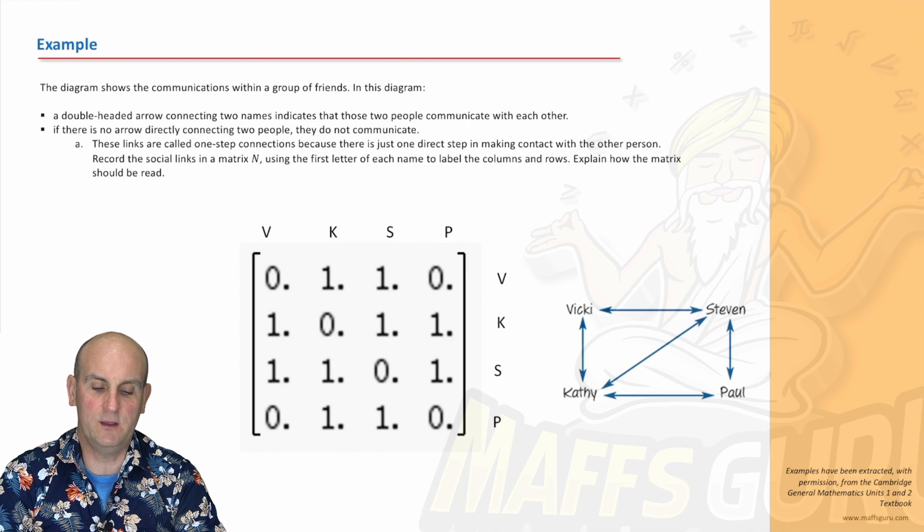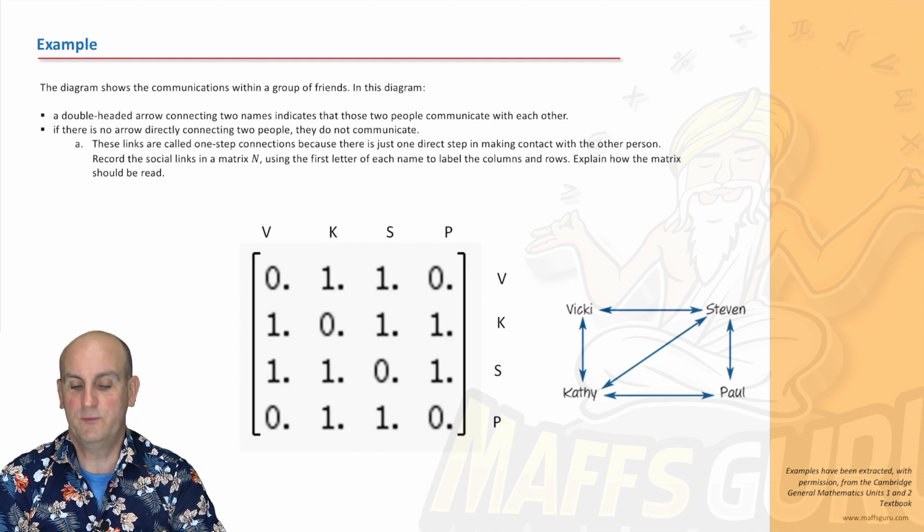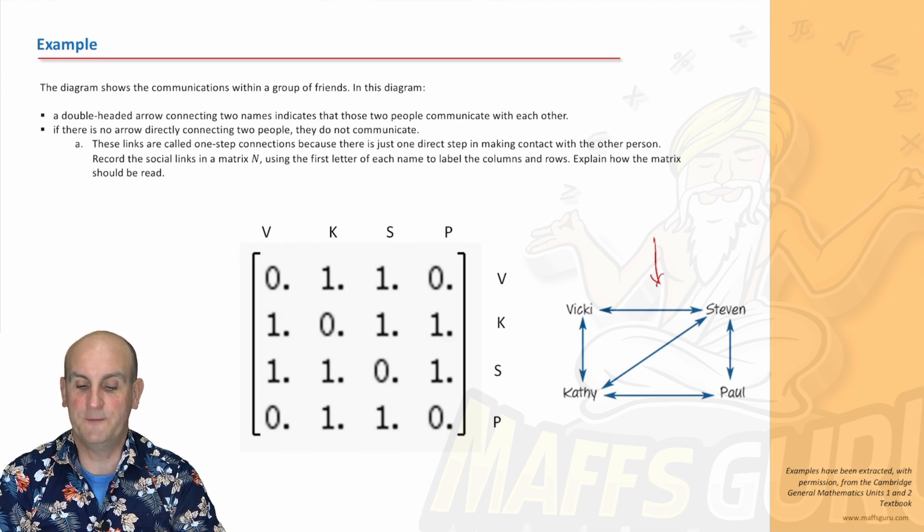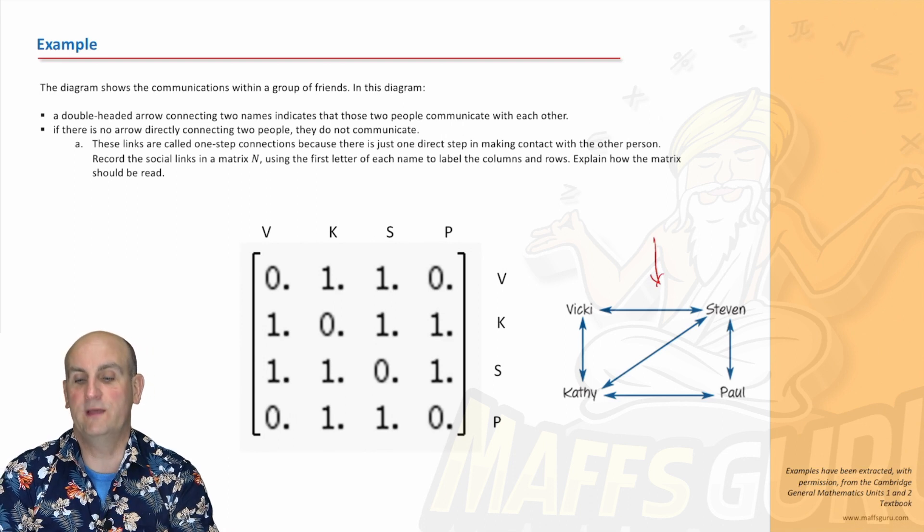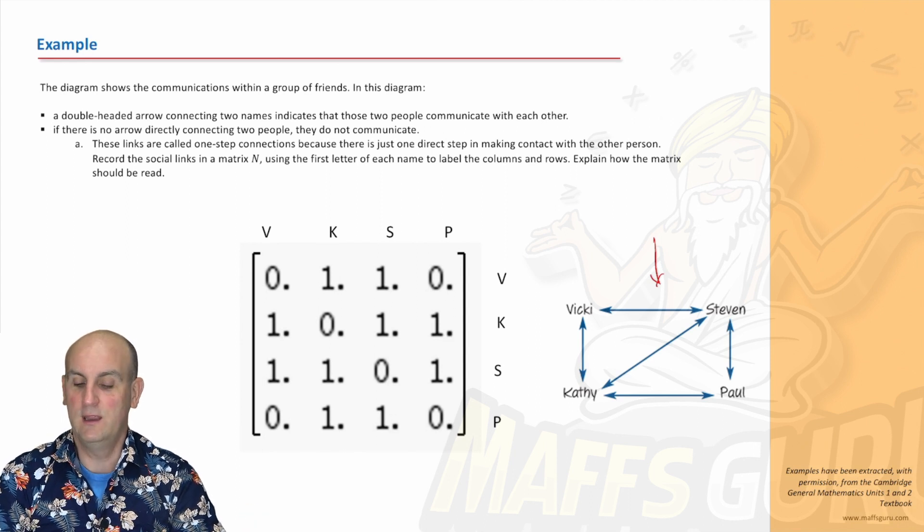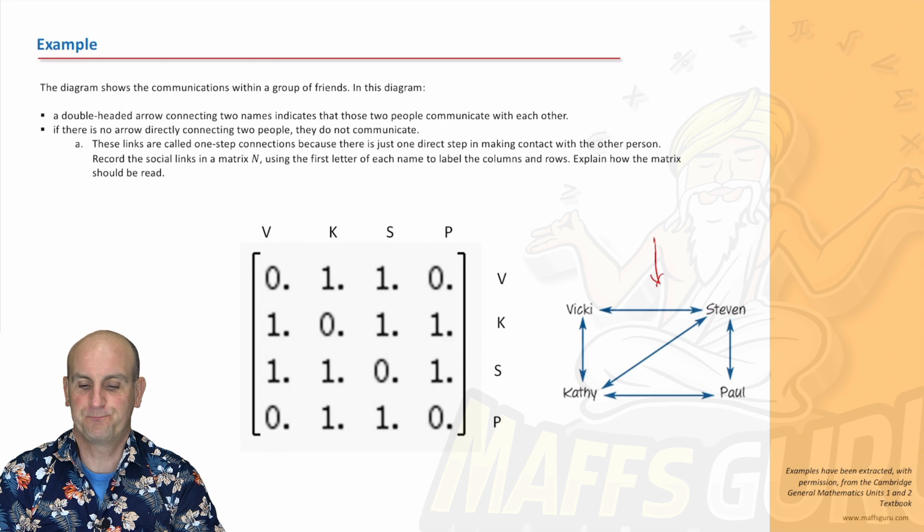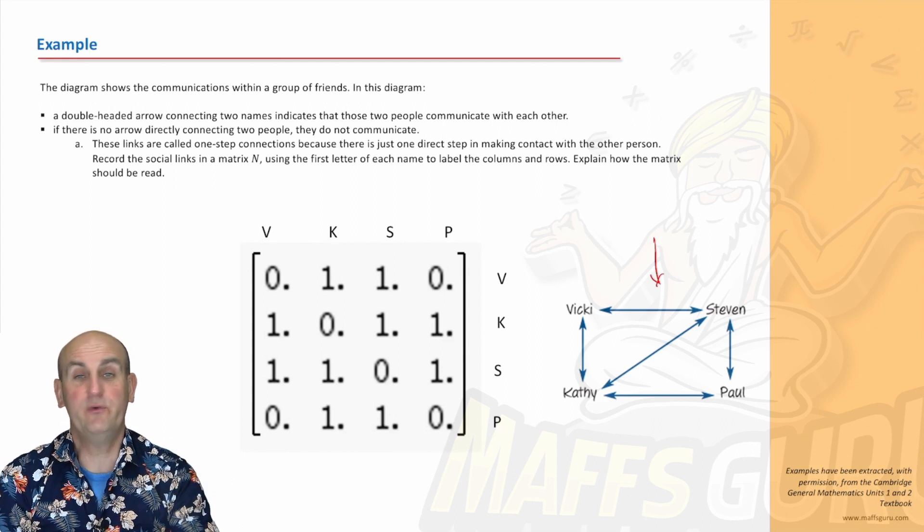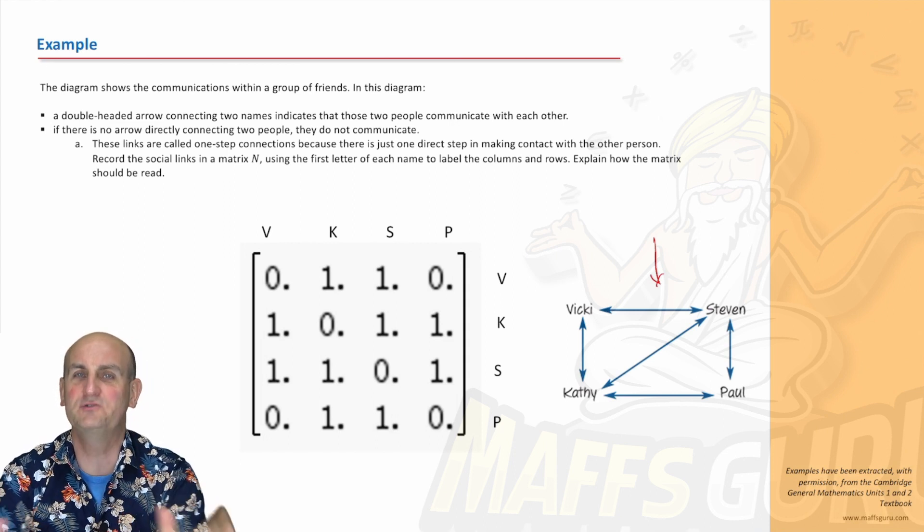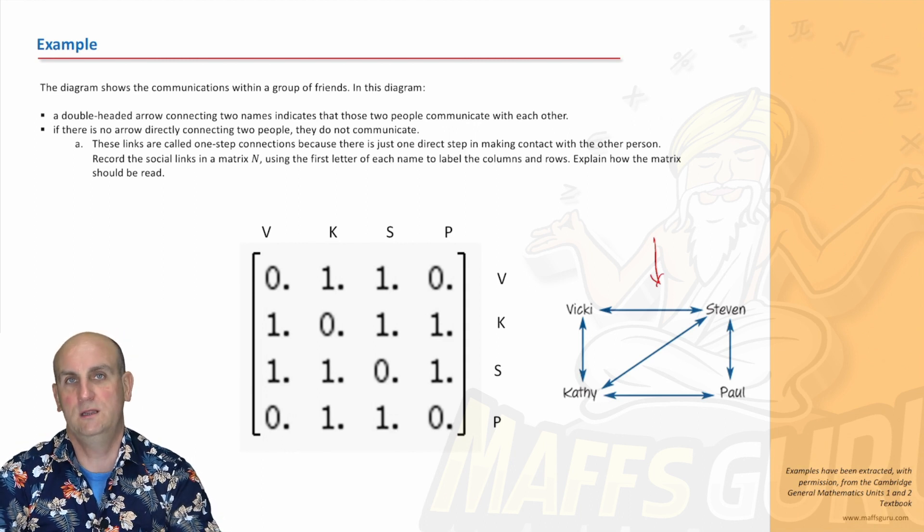The diagram below shows communications within a group of friends. Look at this diagram here. You've got Vicky, Stephen, Paul, and Kathy. That is basically a friendship group, a social network. The arrows tell you who can talk to each other. Obviously these are all quite nice people, they're all talking to each other.